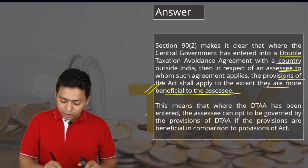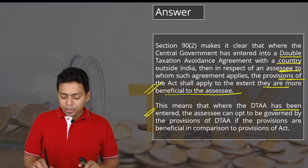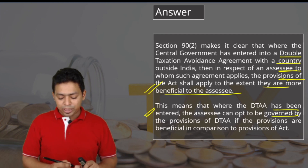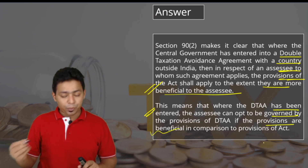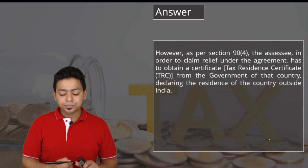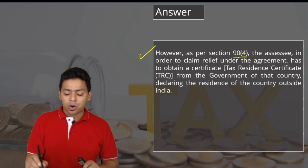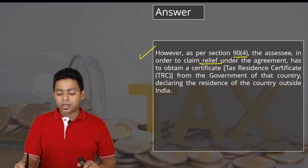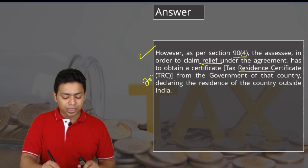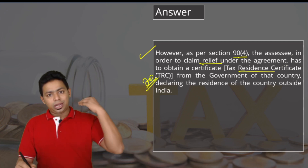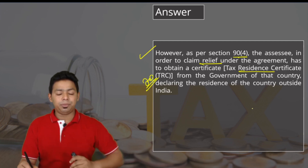Section 90 sub-section 2 makes it clear that where the central government has entered into a double taxation avoidance agreement with a country outside India, the provisions of the Act shall apply to the extent they are more beneficial to the assessee. This means where a DTAA has been entered, the assessee can opt to be governed by whichever of the DTAA or Income Tax Act provisions are more beneficial. However, as per Section 90(4), to claim relief under the agreement, the assessee must obtain a Tax Residency Certificate.